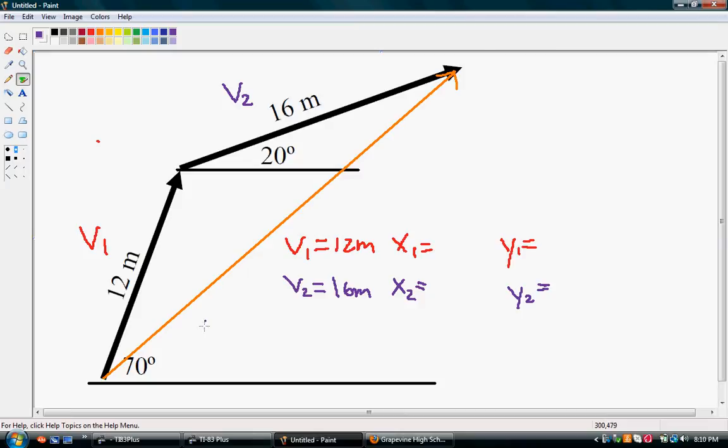Alright, so what we need to do is use trigonometry to solve for our components. And we know that sine theta is equal to opposite over hypotenuse. If we rearrange this, our hypotenuse sine theta would equal our opposite, which is typically our y side. And it will be for the purposes of this tutorial.